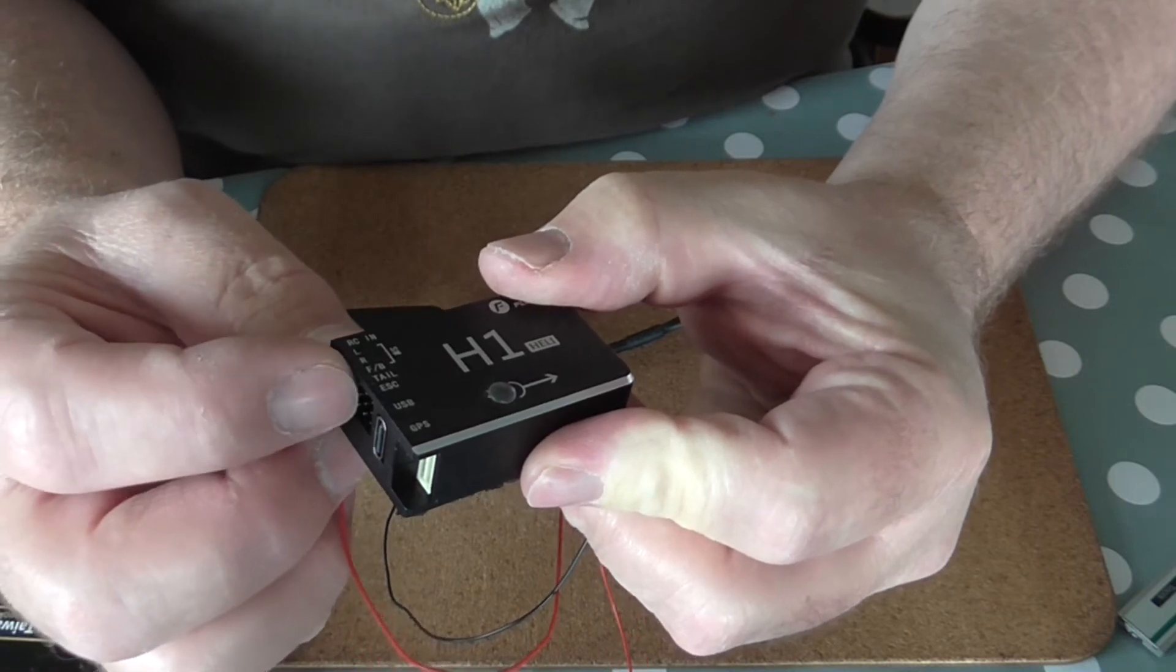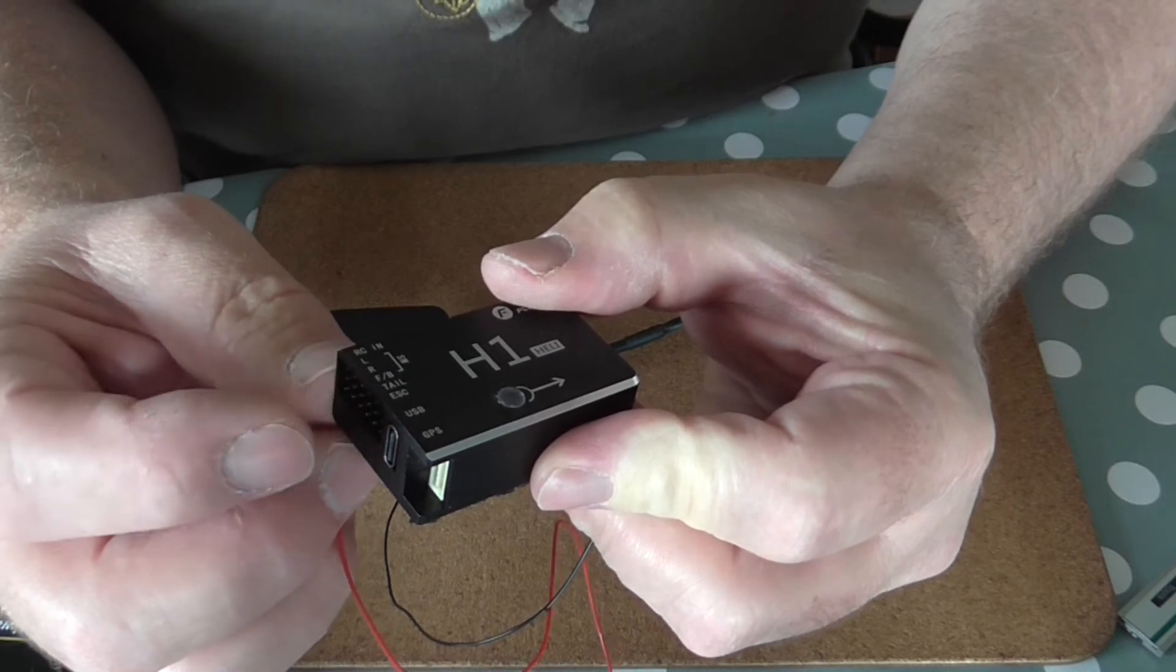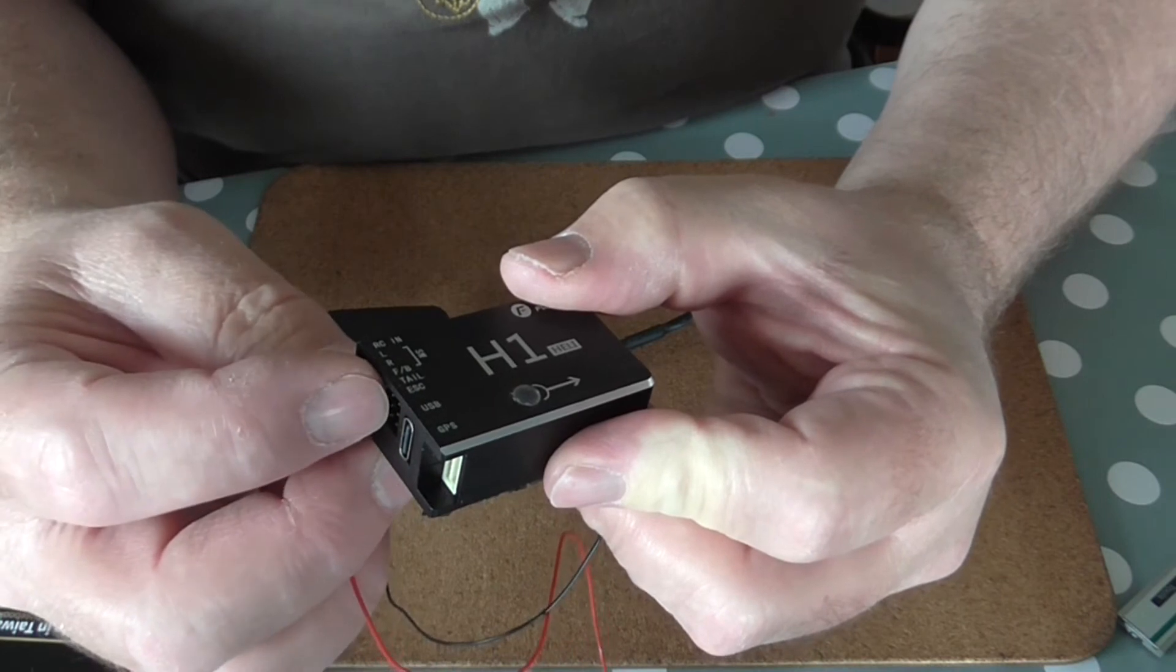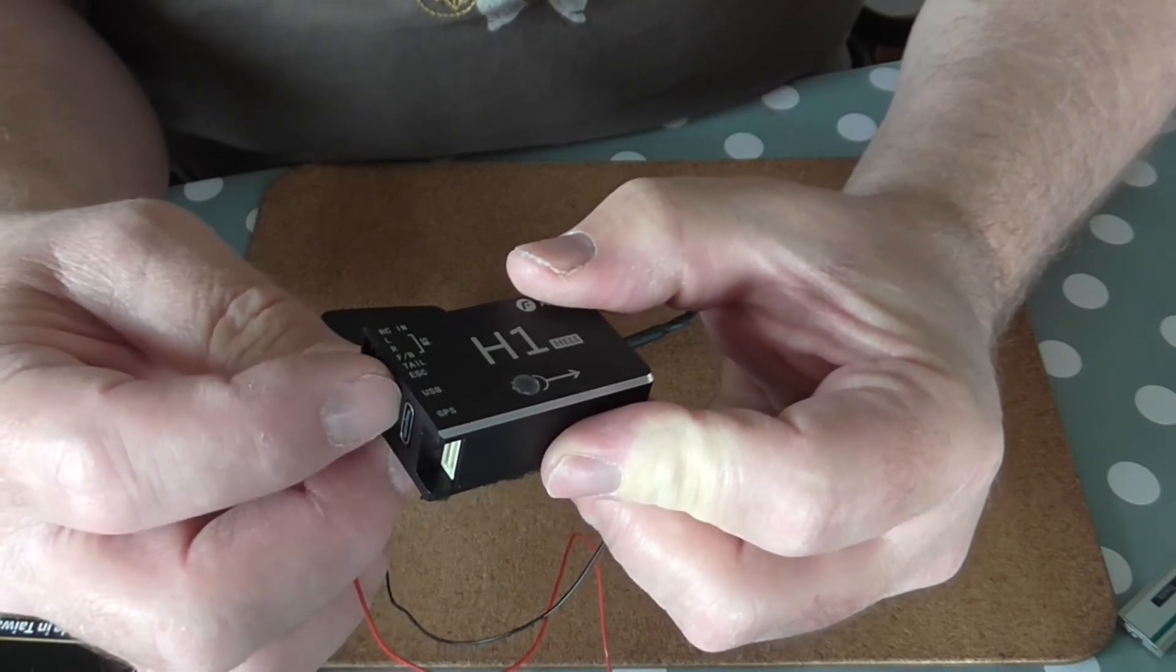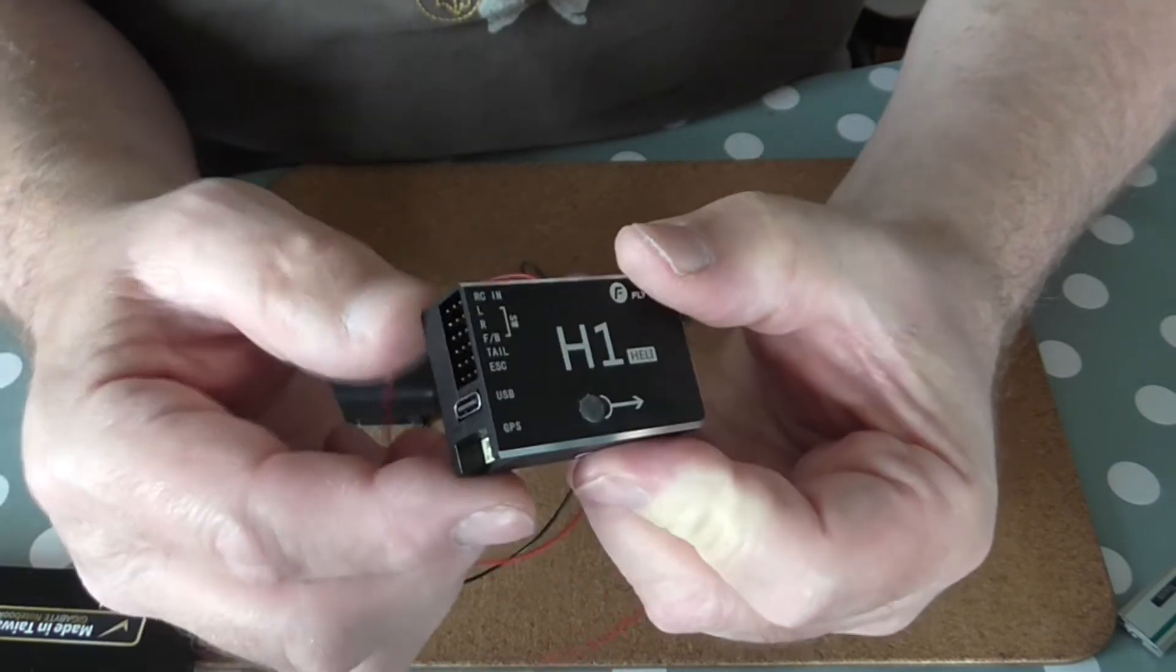Left and right swash servos, your front and back, if you like, swash servo, your tail servo, and your ESC. So everything goes into here.